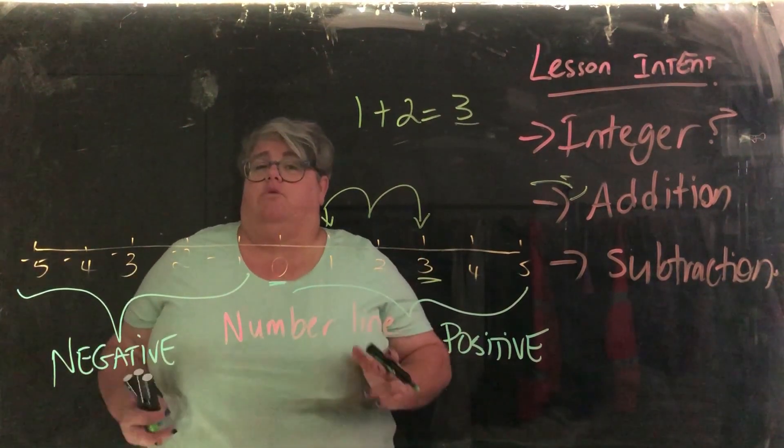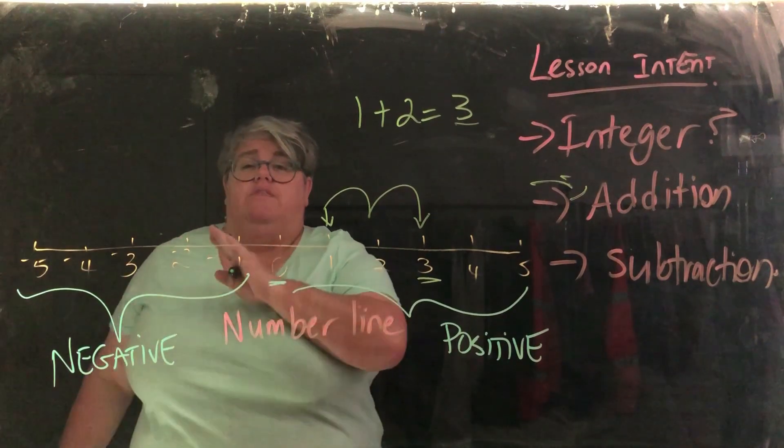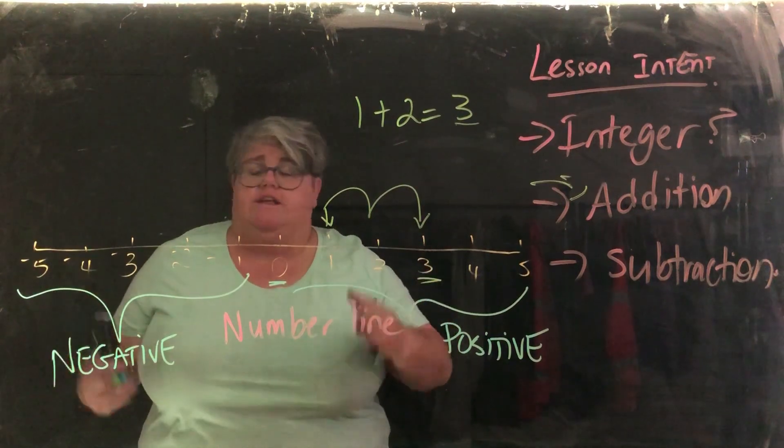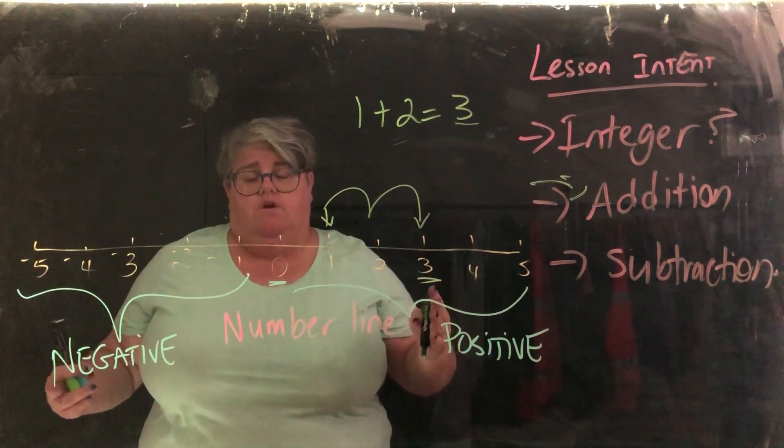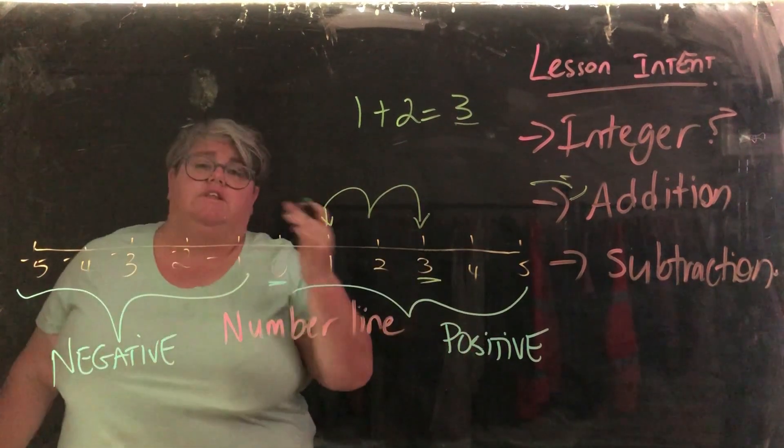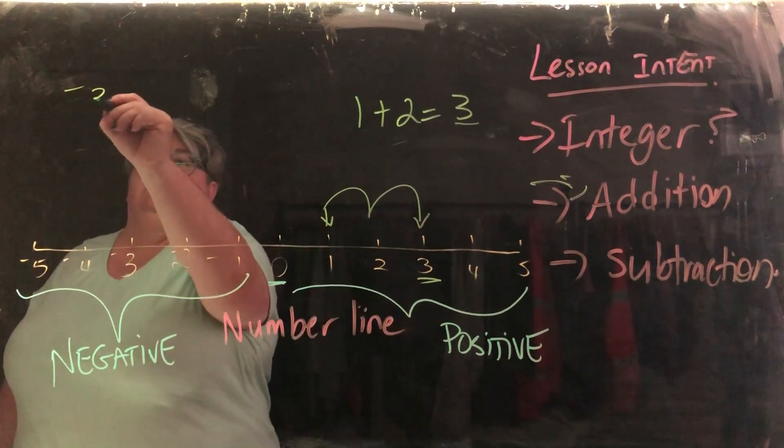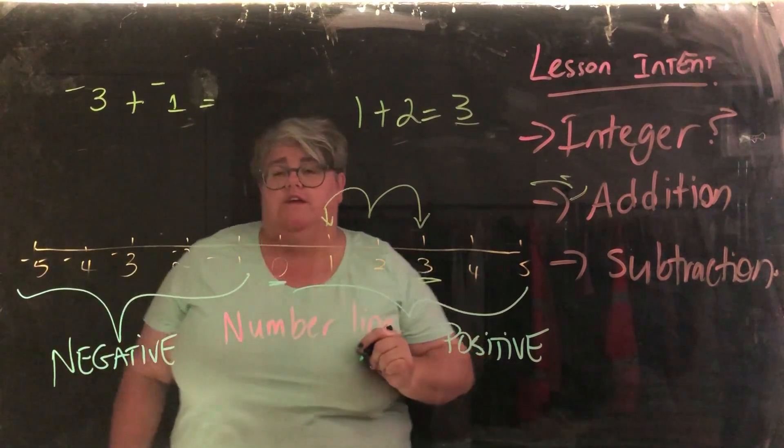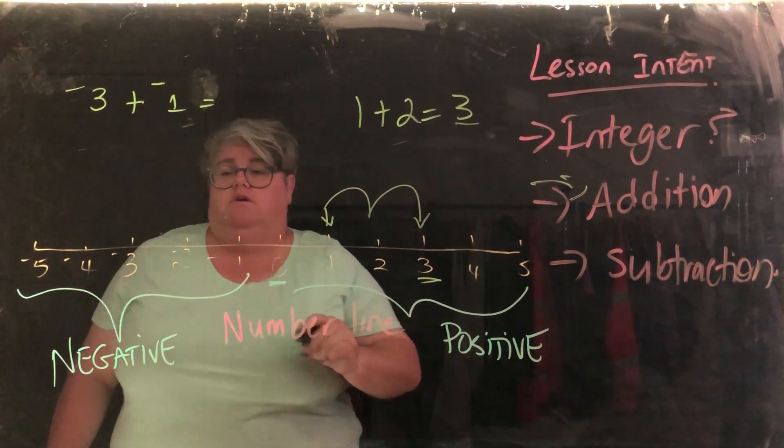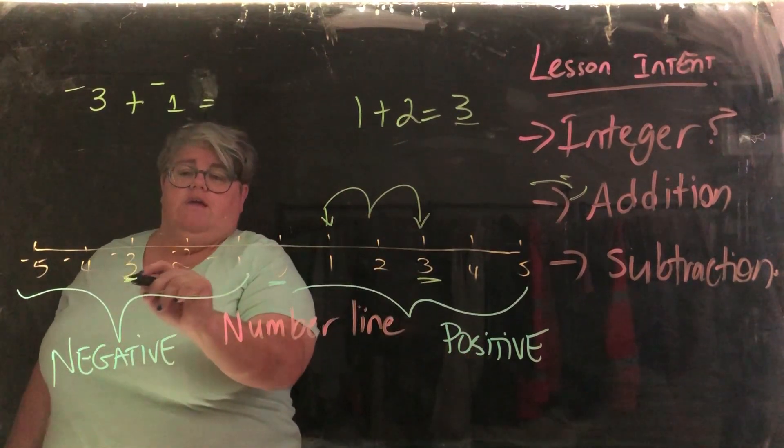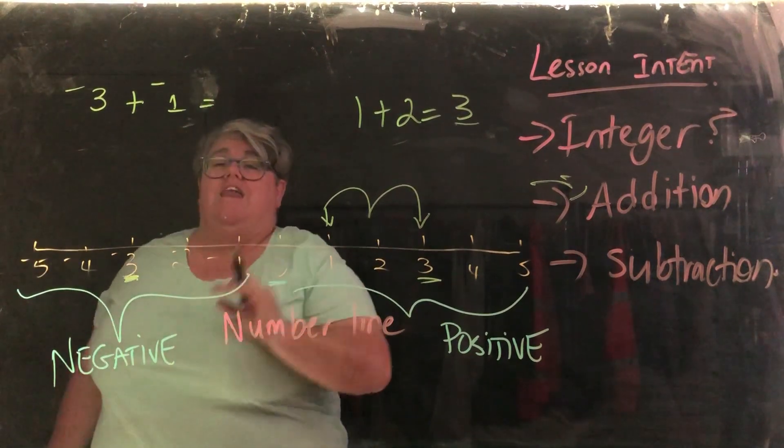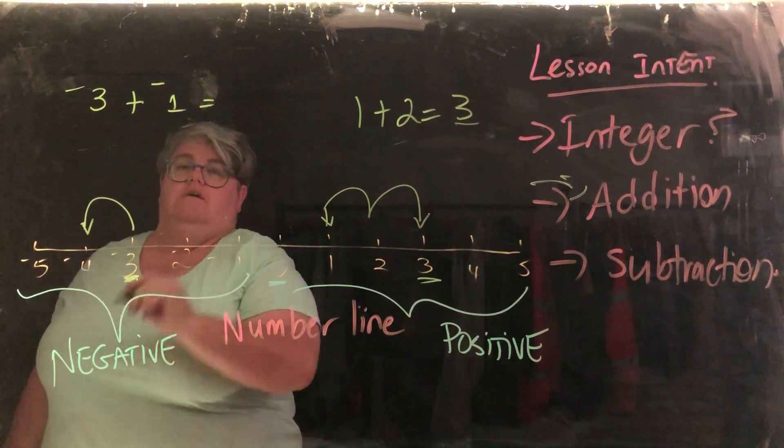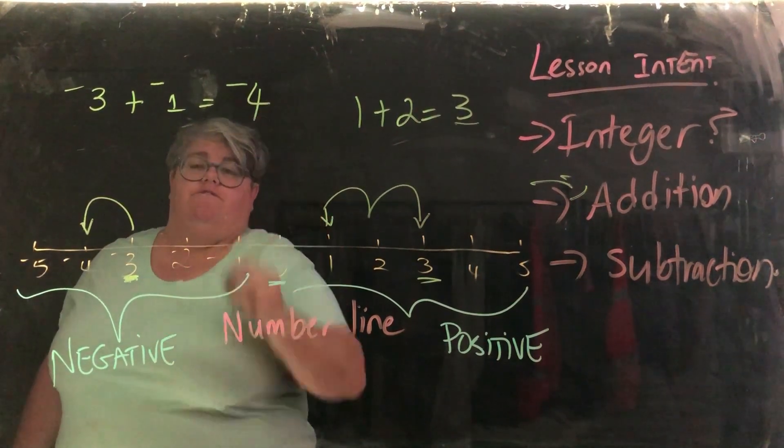Where things can get a little bit complicated though, is when we're dealing with negative numbers. But the theory and the process behind it is still exactly the same. So let's say we had negative 3 plus negative 1. What do you think the answer is? So we're starting here at 3 and we're adding another negative number. So we're actually going back 1 this way. So the answer is negative 4.